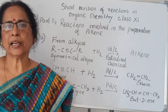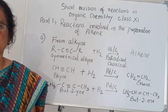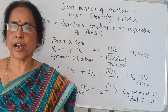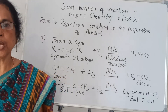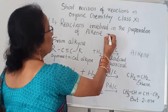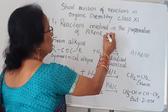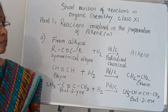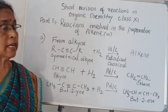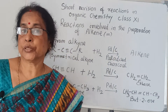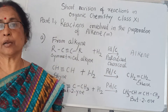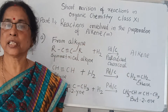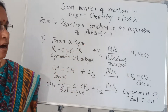What is alkene? Alkene is an unsaturated hydrocarbon which contains double bonds. Generally there are two types of unsaturated hydrocarbons: one is alkene, and the other is alkyne.